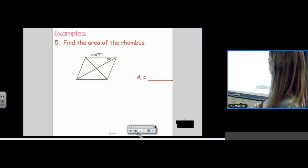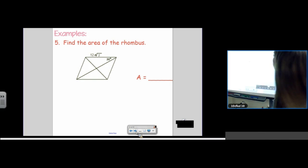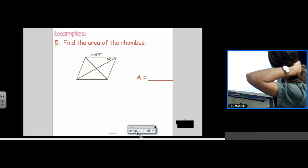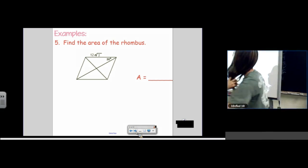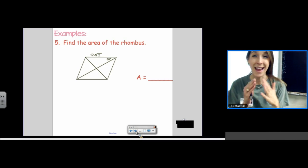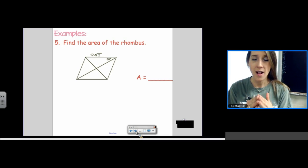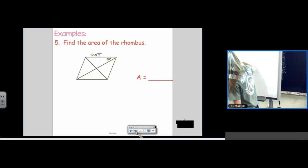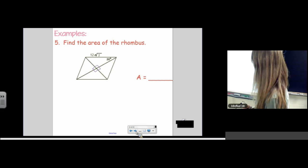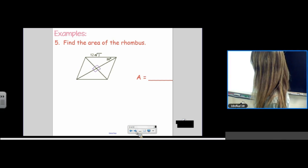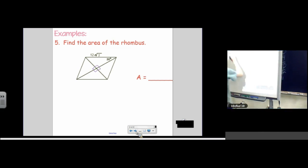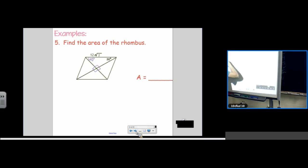One more rhombus problem before we move on to kites. Find the area of the rhombus. So, we have to know that in a rhombus, the diagonals are perpendicular. That happens in rhombus, squares, and kites. So, we need to remember that from the quad unit. We have 12 root 2, and that's across from 90. We have a 30, 60, 90 triangle.